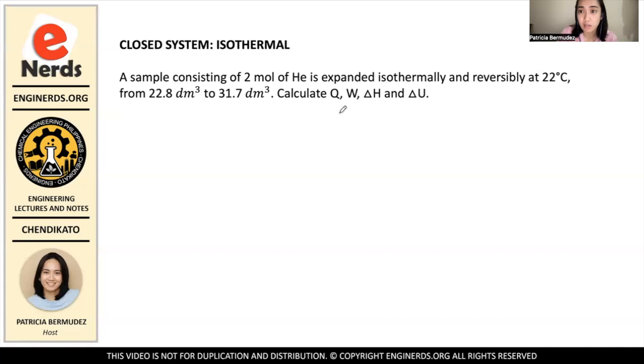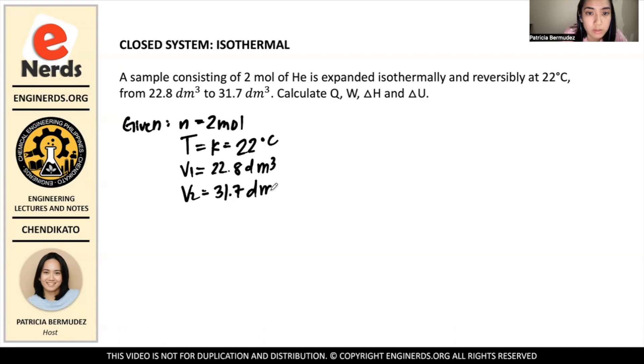So we know that q is the heat, w is the work, delta h is the change in enthalpy, and delta u is the change in internal energy. For this problem, what I'll do is to find work first, because it's the easiest to find. First we have to list down the given values. We know that n equals 2 mols, temperature is constant at 22 degrees Celsius, v1 is 22.8 cubic decimeter, and v2 equals 31.7 cubic decimeter. The required values are q, w, delta h, and delta u.